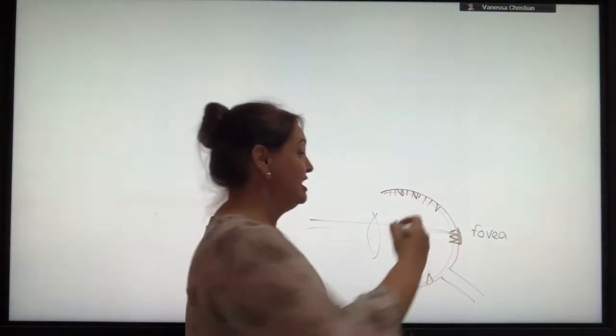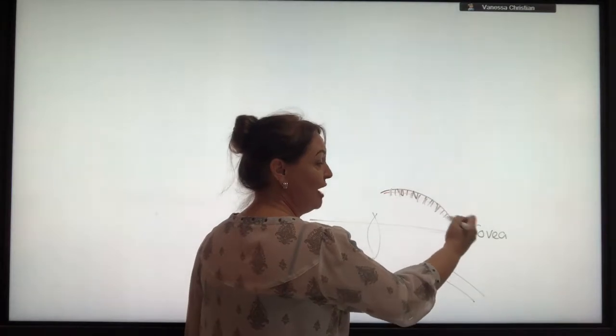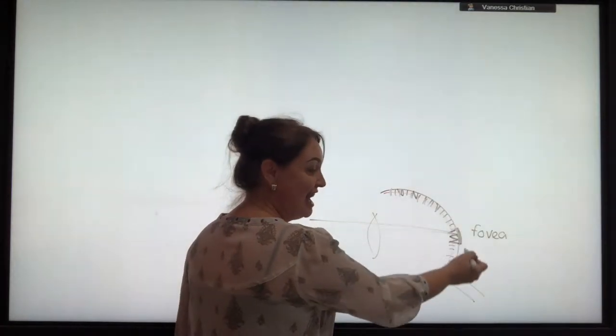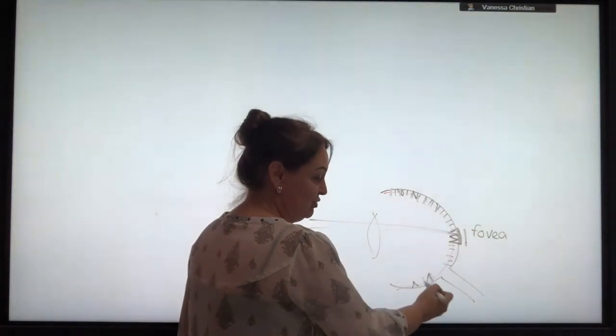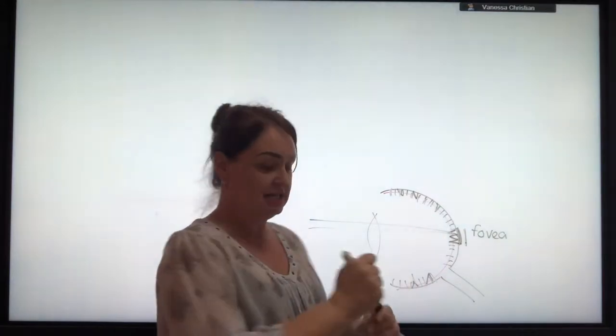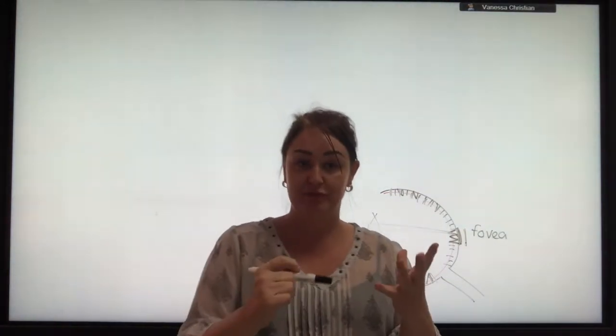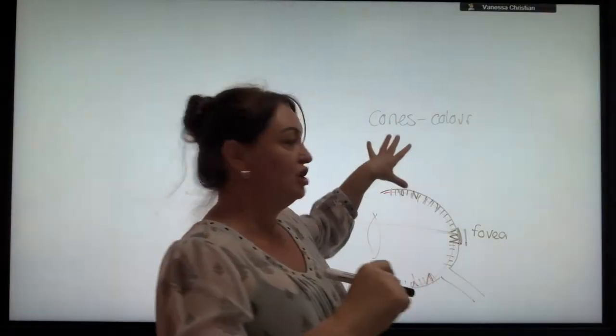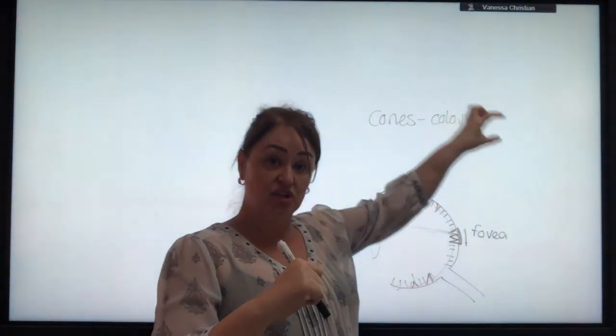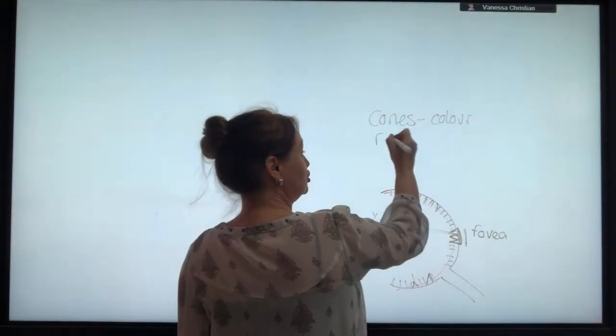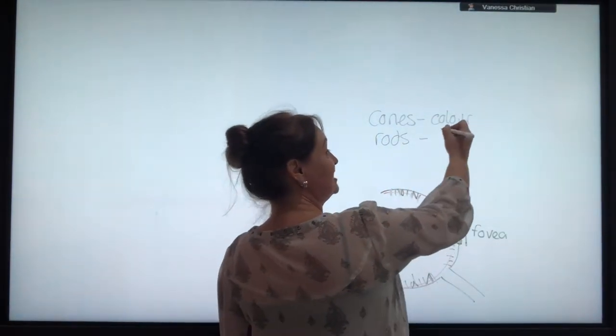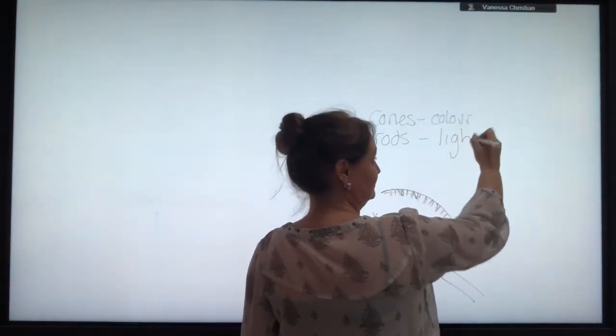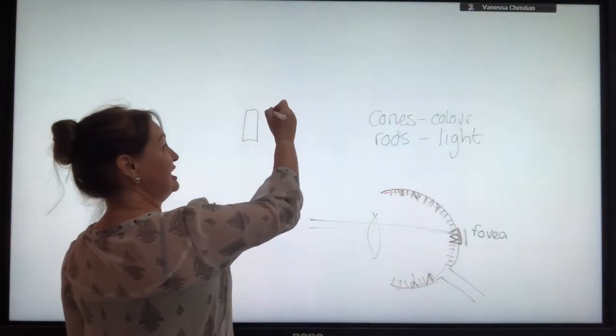For rod cells, they are distributed all around the periphery and less so here. So they are all around the outside. You'll remember from GCSE that cones detect color and rods detect just light. If I just draw my rods like this.